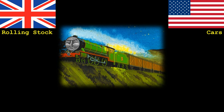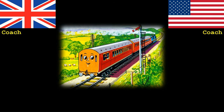A train does not just exist of an engine or locomotive. It does require a way of transporting people and cargo around. The generic term for other items in a train in the UK would be rolling stock, whilst in America you would know these as cars. And of course there are many different types. Let's start by looking at how we transport people.